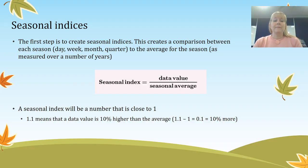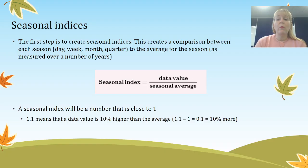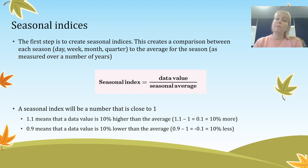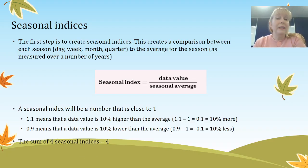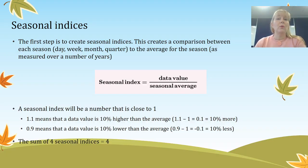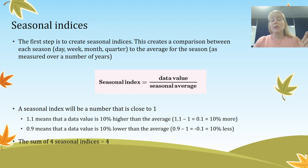Here's how to interpret seasonal indices. They will usually be a number close to one. For example, 1.1 would mean that the data value is 10% higher than the average for the season, and 0.9 would mean it's 10% lower. Something really important to remember: the sum of four seasonal indices — spring, summer, autumn, winter, or quarters one through four — will always add up to four. So if you've got 0.9, 1.1, and 1.2, the fourth number will make all four add up to four.